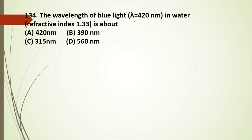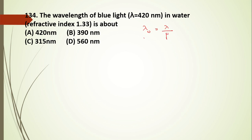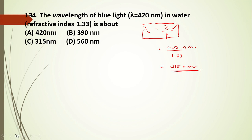Question 134: the wavelength of blue light in water. The wavelength in a medium is related to the wavelength in air by lambda = lambda₀ divided by the refractive index mu. The wavelength in air is given as 420 nanometers, divided by the refractive index of water 1.33, giving approximately 315 nanometers.